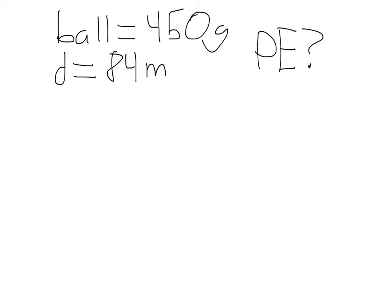So for PE, potential energy, we need mass times gravity. Or is it acceleration? There is no acceleration. Mass times distance times... Therefore acceleration is zero. Yeah, mass times gravity times distance.